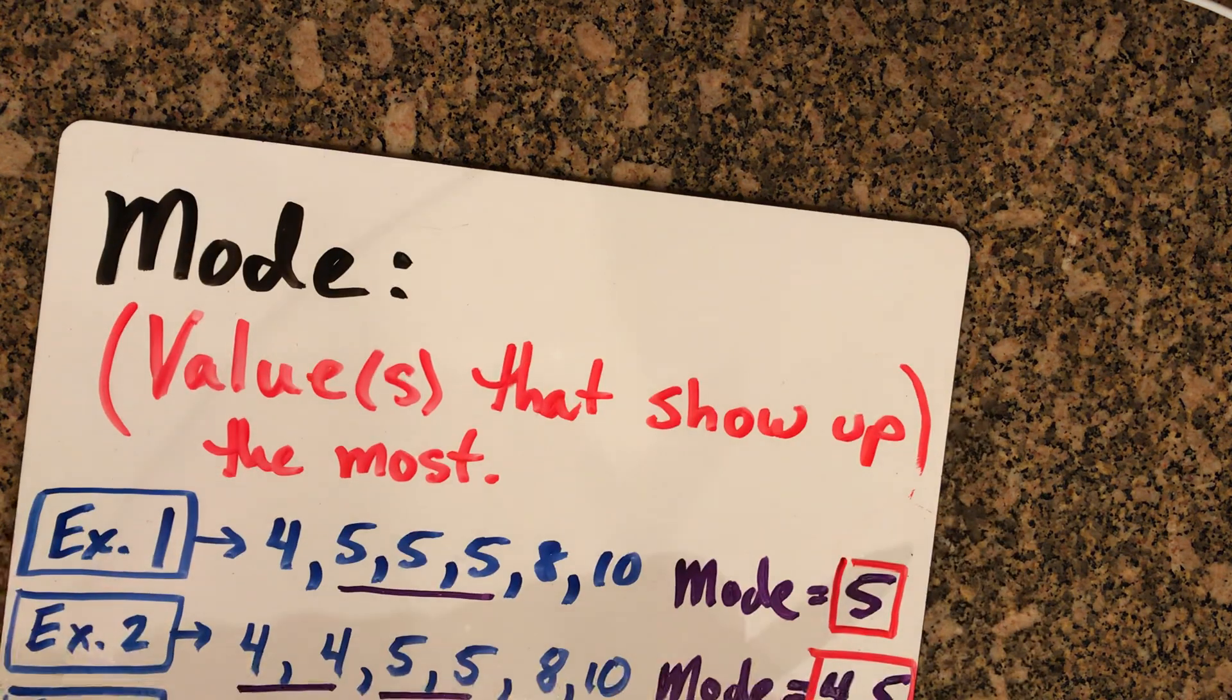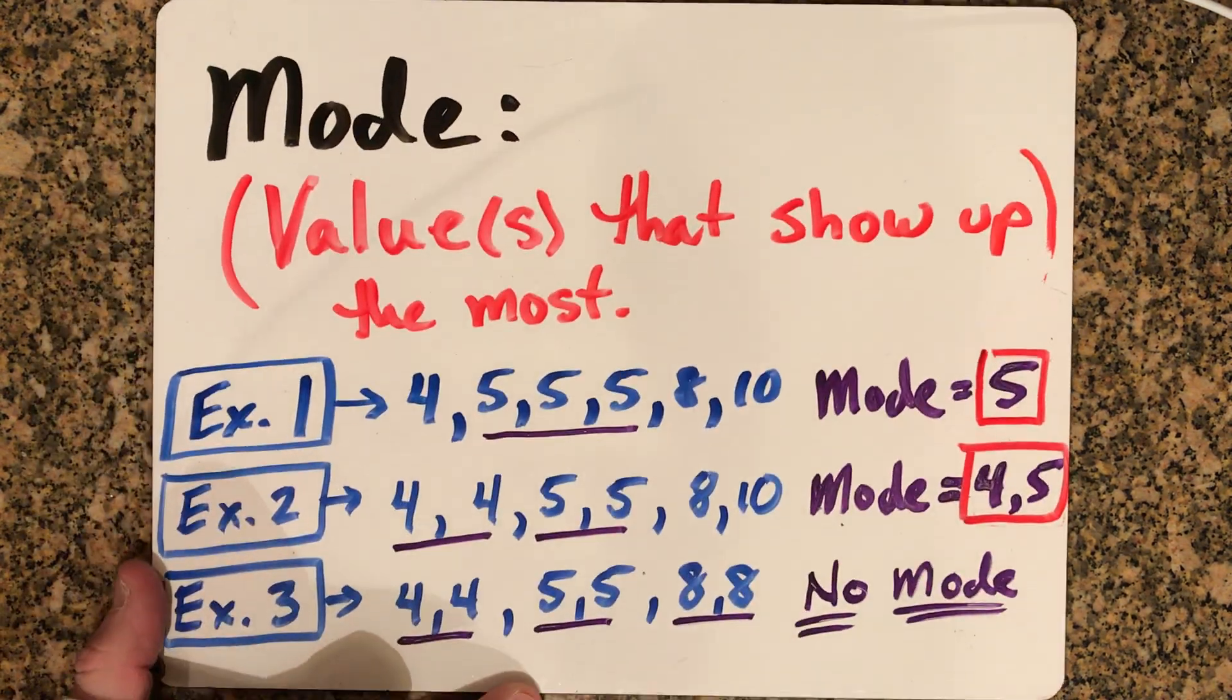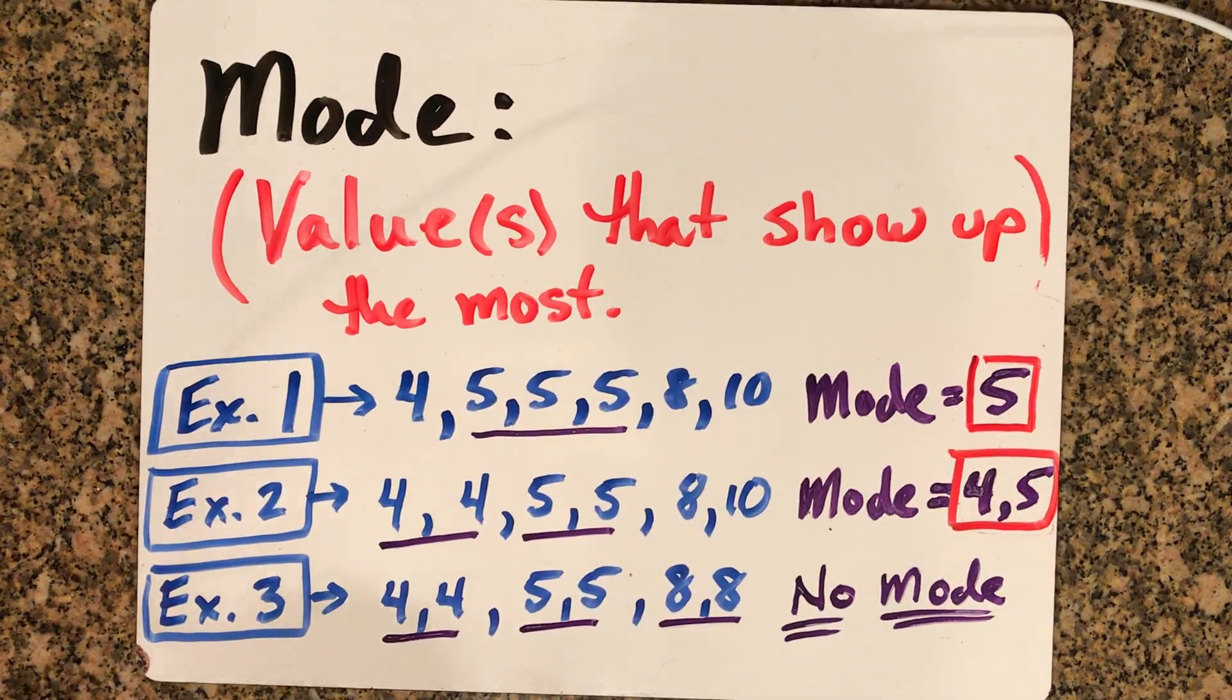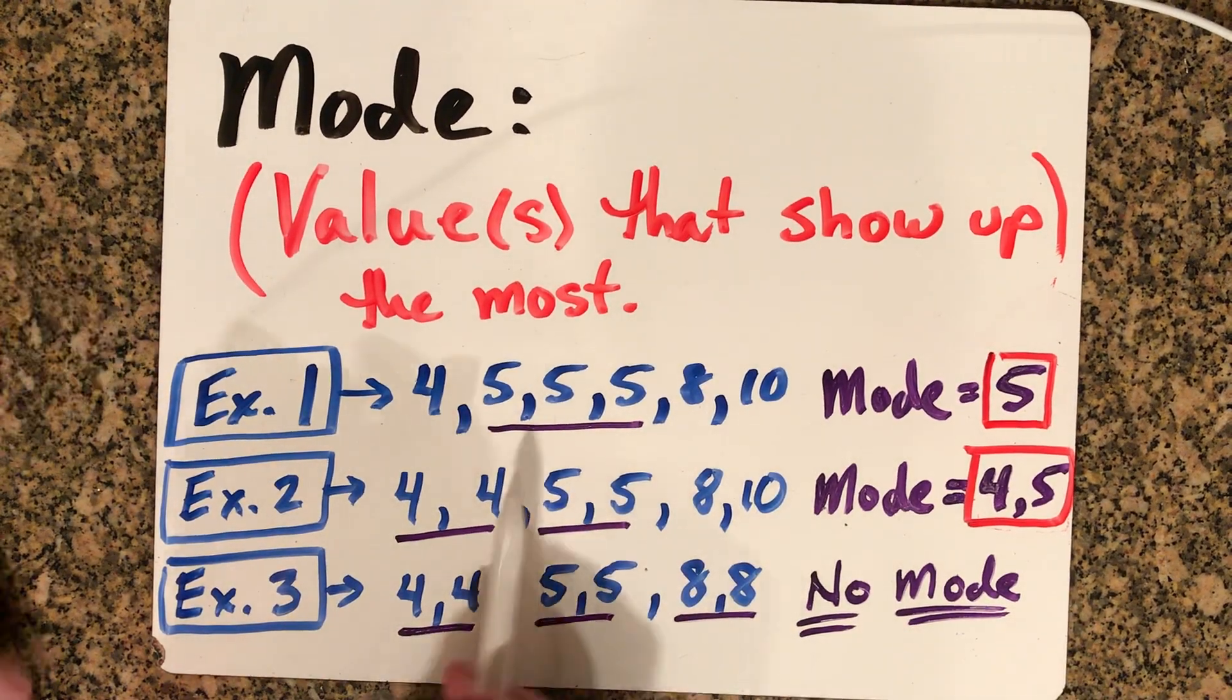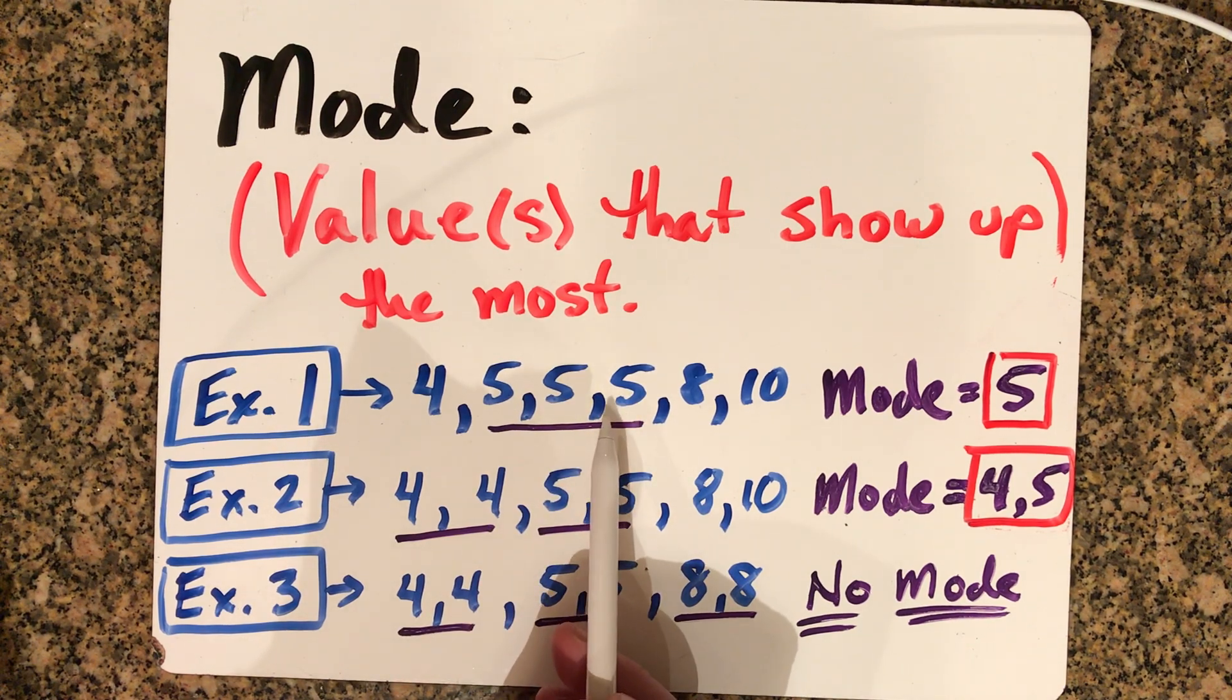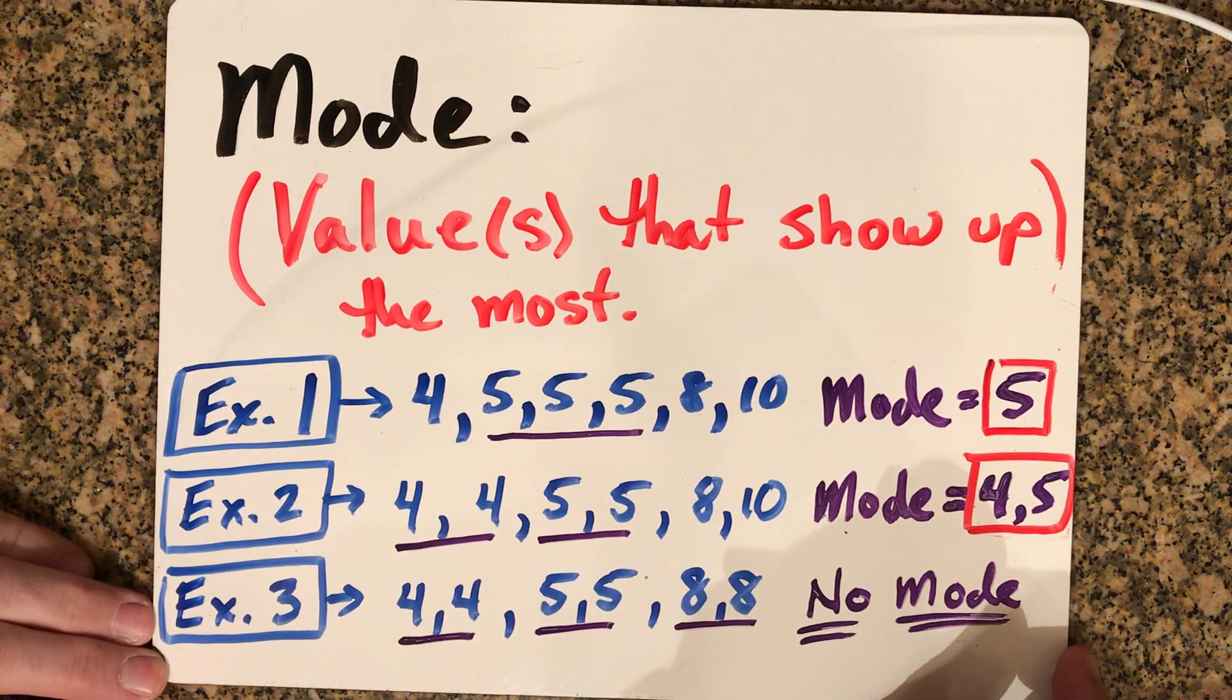Next, the mode. If you're trying to figure out the central value of a data set using the mode, the mode is the value or values that show up the most. In the first example, the number five shows up three times. That one wins and gets to be called the mode because it shows up the most.